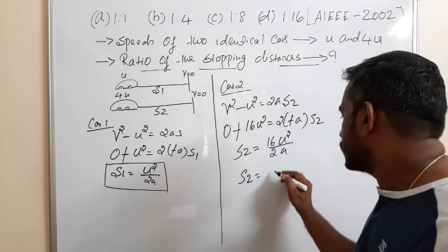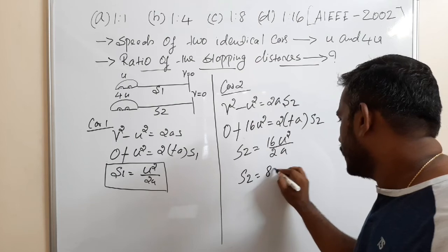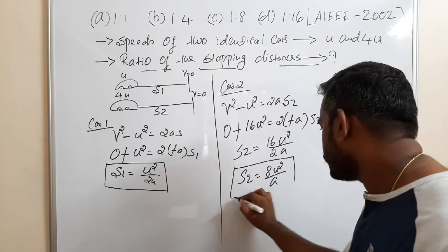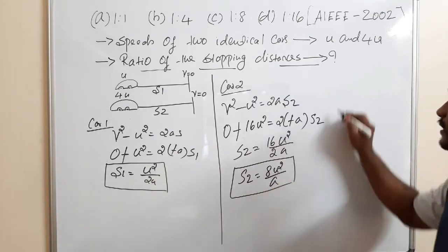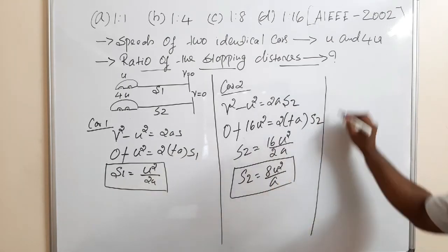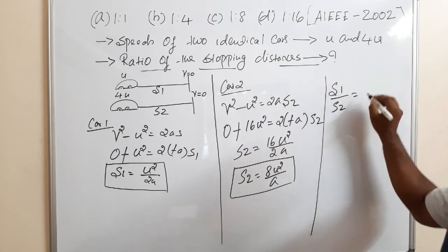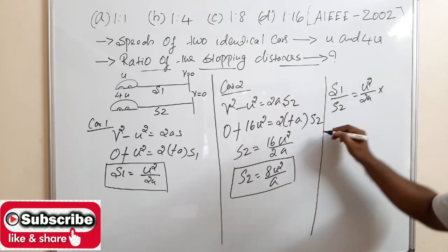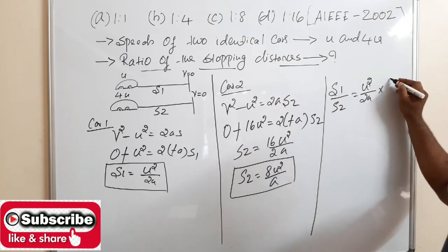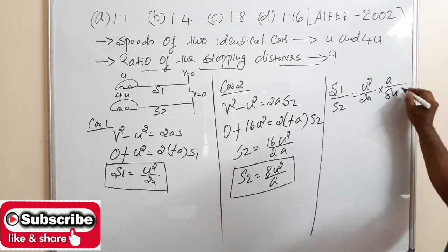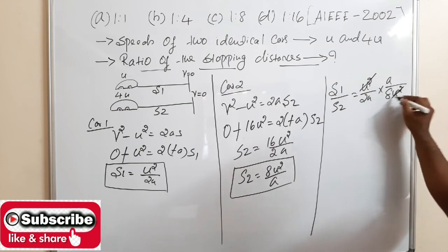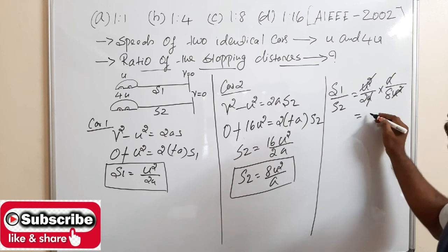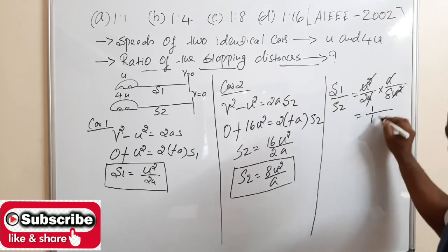So S2 is equal to 16u² divided by 2A, which simplifies to 8u² divided by A. That is the stopping distance of the second car. Now, S1 by S2 equals (u²/2A) multiplied by the reciprocal, that is A divided by 8u². The u² terms cancel and the A terms cancel, giving 1 by 16.